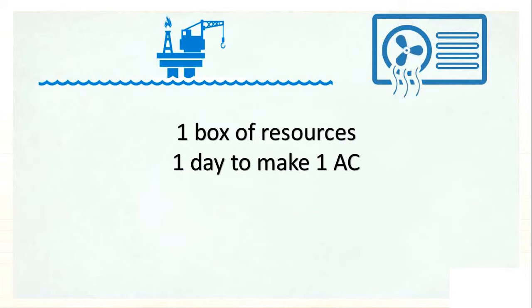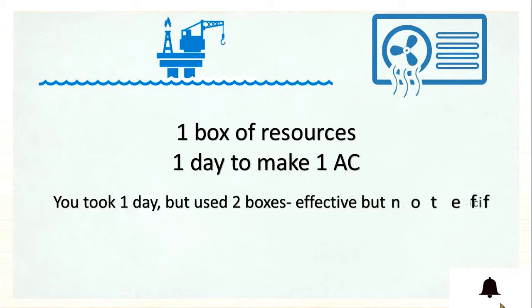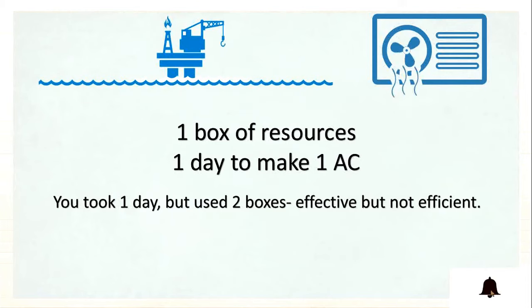The first scenario, you took one day but you have used two boxes of resources, but you had to use one box. So at this time you're being effective but not efficient. How? You're being effective because you have taken one day, so you completed your task within one day. But you had to use one box of resources but you have used two boxes of resources, that's why you are not being efficient.